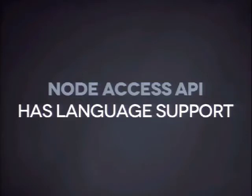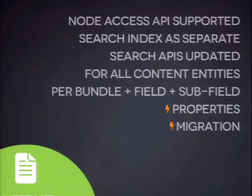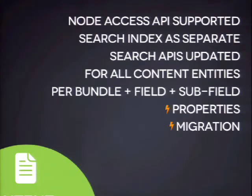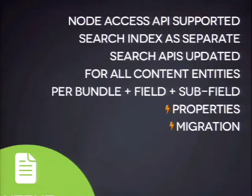There's also node access API per language. Now that we store all translations in one entity, we support access control per language for nodes. In summary: we support node access API per language, search indexing as separate content per language, updated search APIs. This applies to all content entities in core — including menus, taxonomy terms, regular content, users. You can configure translatability on a per-bundle level (content type, custom block type, etc.), field level, and sub-field level — very granular.